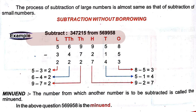Subtract 3,47,215 from 5,66,958. We have to subtract 3,47,215 from the number 5,66,958.